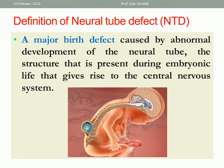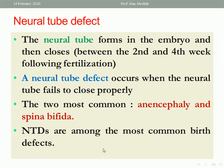Neural Tube Defect is a major birth defect caused by abnormal development of the neural tube — the structure present during embryonic life that gives rise to the central nervous system. The neural tube forms in the embryo and then closes between the second and fourth week following fertilization. A neural tube defect occurs when the neural tube fails to close properly. The two most common types are anencephaly and spina bifida.